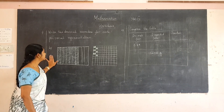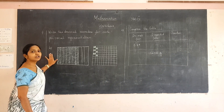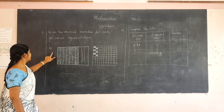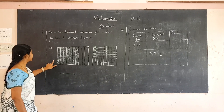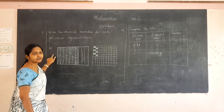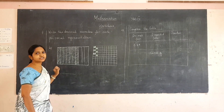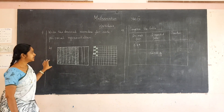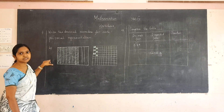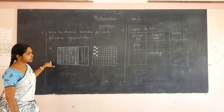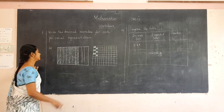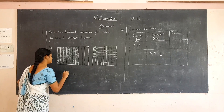Here the whole number part is not given. If a whole number part is given, a square will be given and the whole square will be shaded. Here no such picture is given, so the whole number part is zero. Put zero.